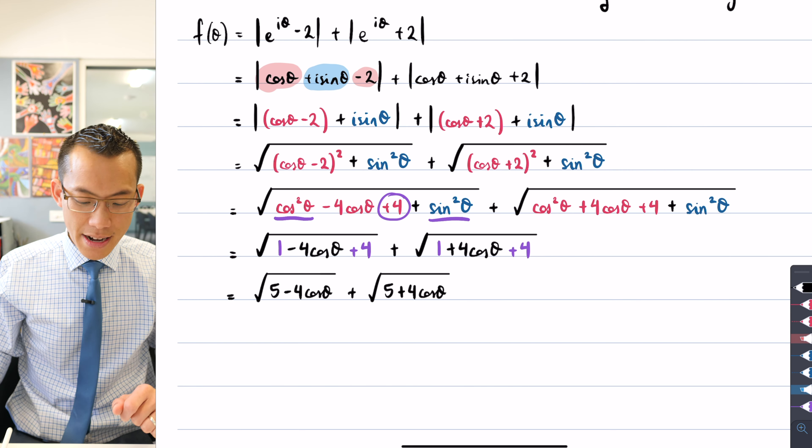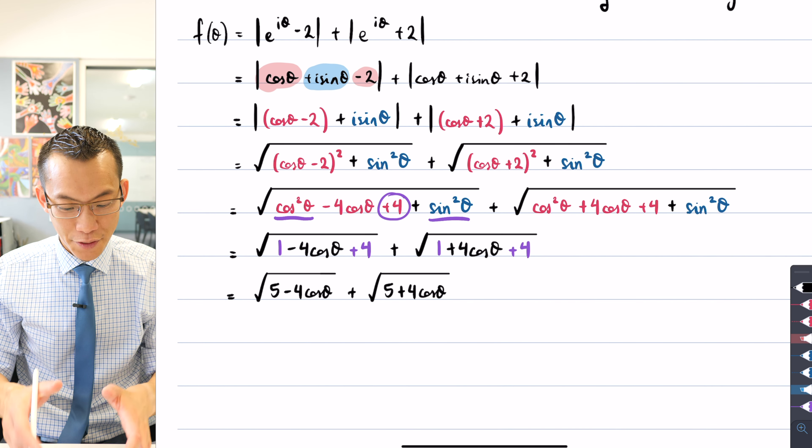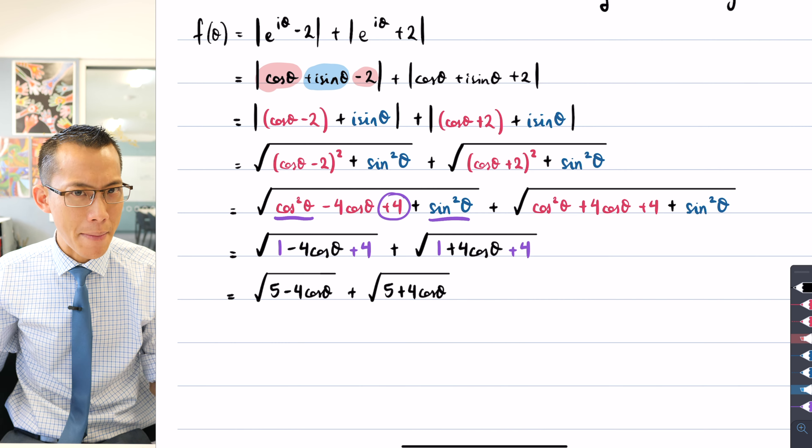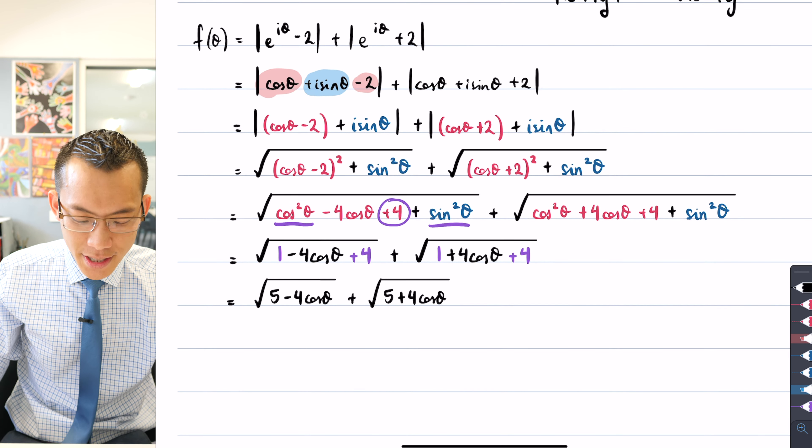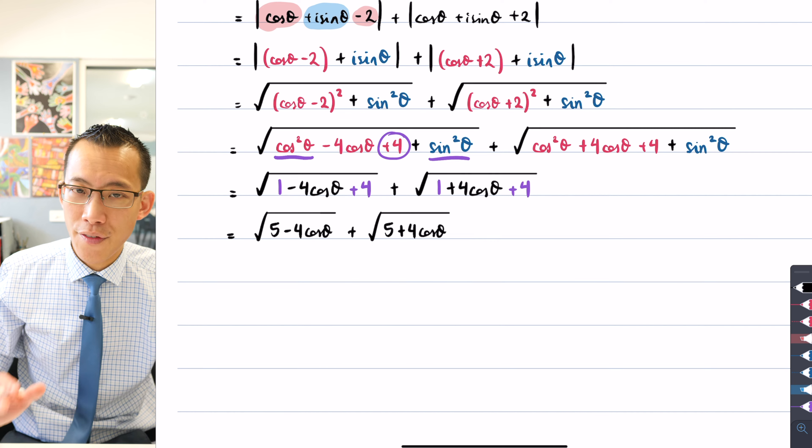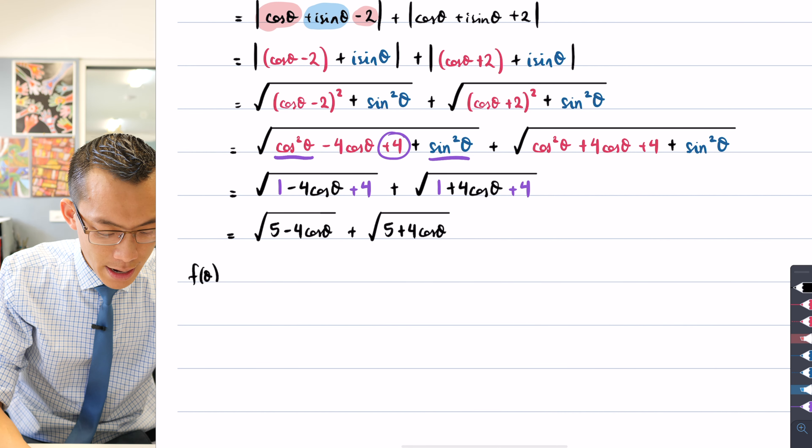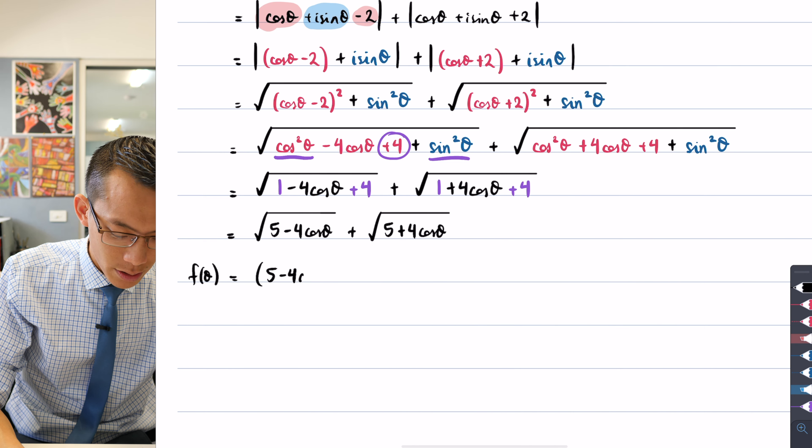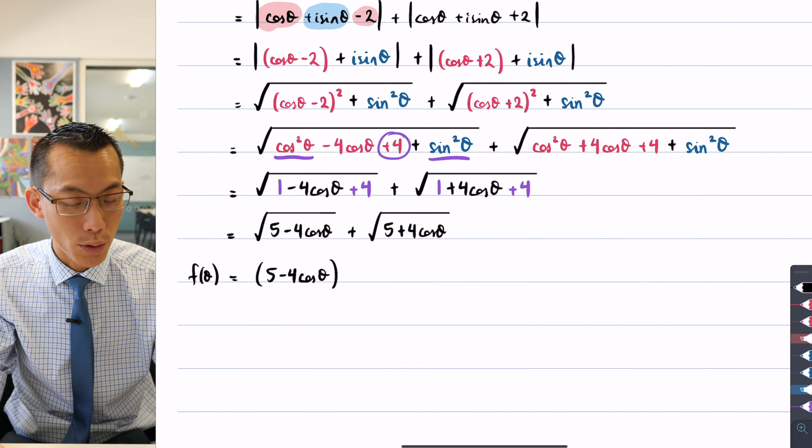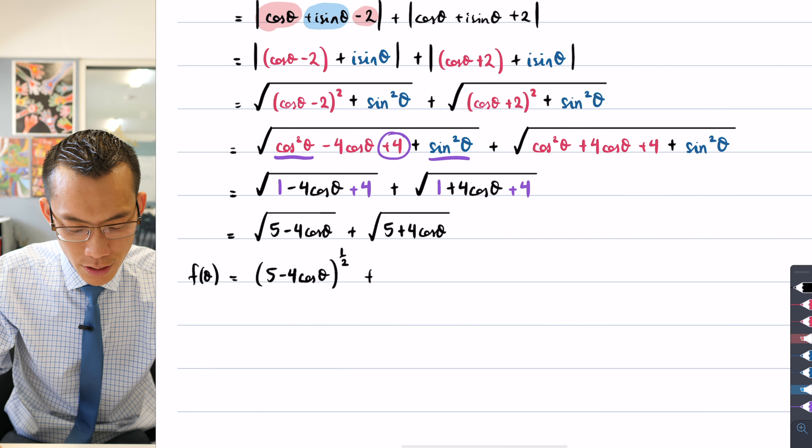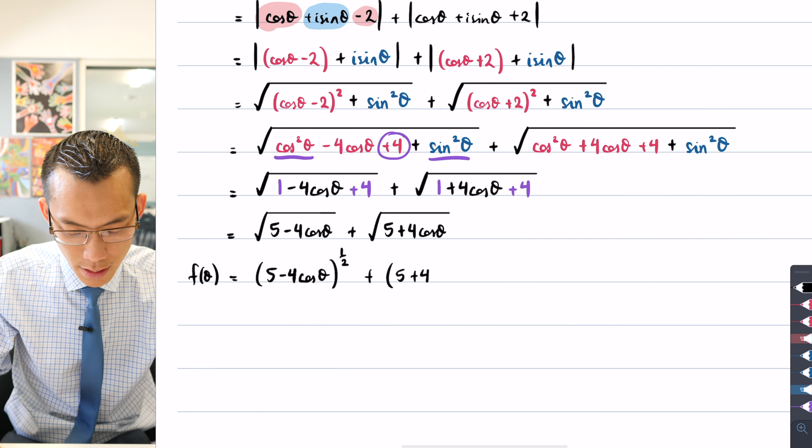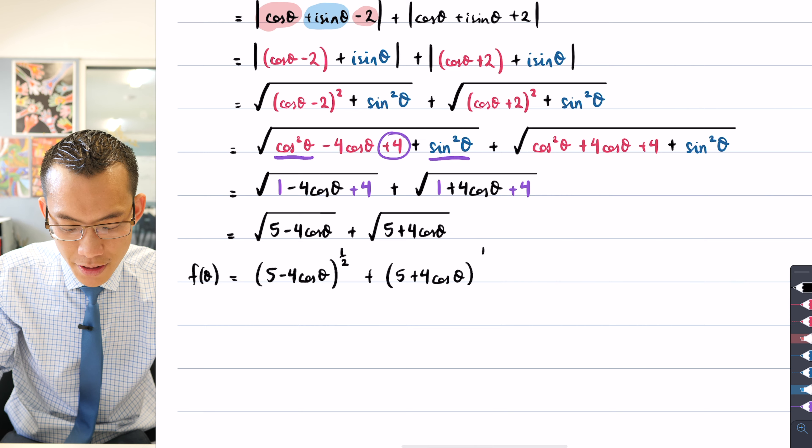And so now I'm almost there. I've got the square root of one plus four in each case is five minus four cos θ, square root over the top. And then plus everything is the same, but it's a plus four cos θ. Okay. Now I am almost ready to go in terms of getting from this to a derivative because I'm trying to maximize. You remember that? But in order to do that, I think it might be easier if I write this in index notation. So I'm going to say our f of θ equals, here we go. Don't have to write these long, awkward square root signs anymore. Five minus four cos θ to the power of half and also five plus four cos θ, power of half. Fantastic.